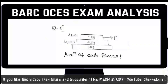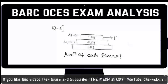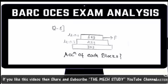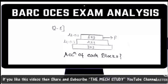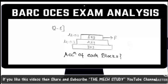The next question is from engineering mechanics, specifically friction. They have asked two to three friction questions continuously. Three blocks are stacked: upper block 1 kg, middle block 2 kg, lower block 3 kg. Friction coefficient between blocks 1 and 2 is 0.1, and between blocks 2 and 3 is 0.3. A force F is applied to the first block, and you need to calculate the acceleration of each block from the given options.